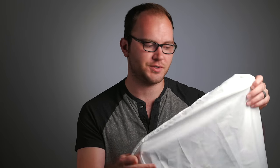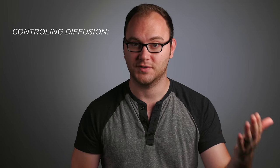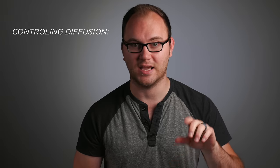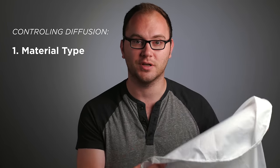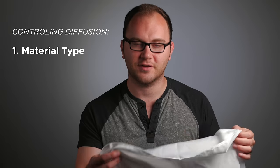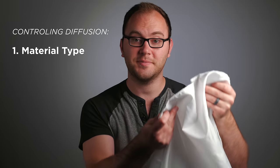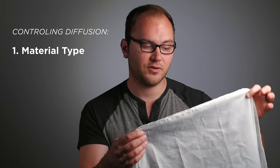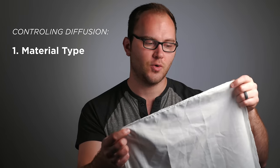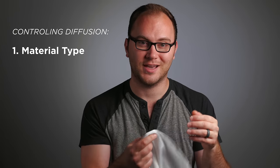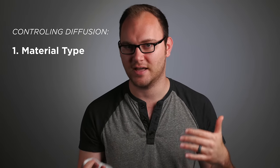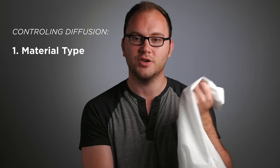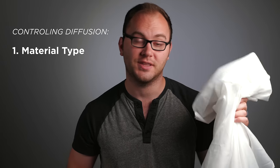Before we jump into types of diffusion and materials and how to rig them up, I want to talk about how we can control that level of soft light we're going to be creating. The first way we can control it is what kind of material we use. A lot of these have a thickness level, or they're thicker, they block more light, or they have a different type of material that will have different effects on that softness level.